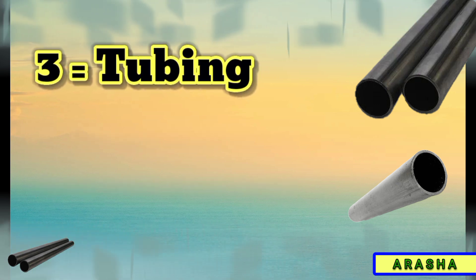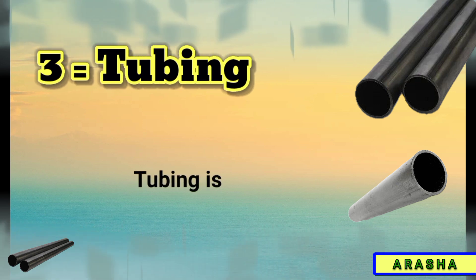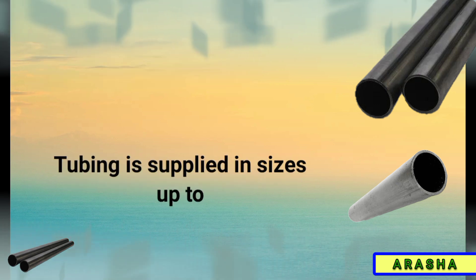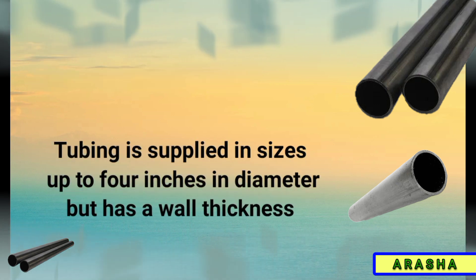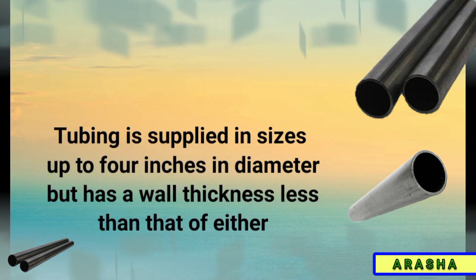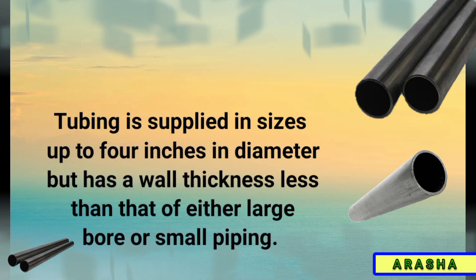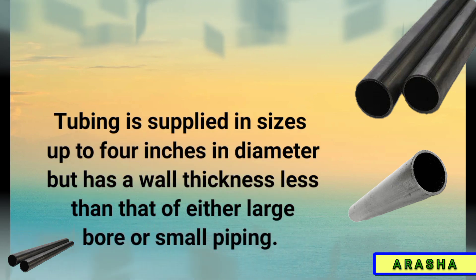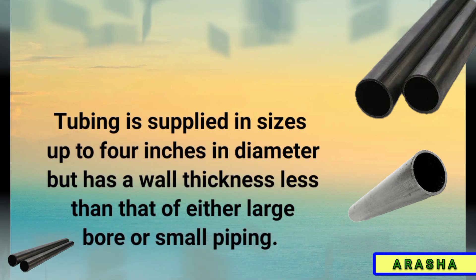Number 3: Tubing. Tubing is supplied in sizes up to 4 inches in diameter, but has a wall thickness less than that of either large bore or small bore piping.